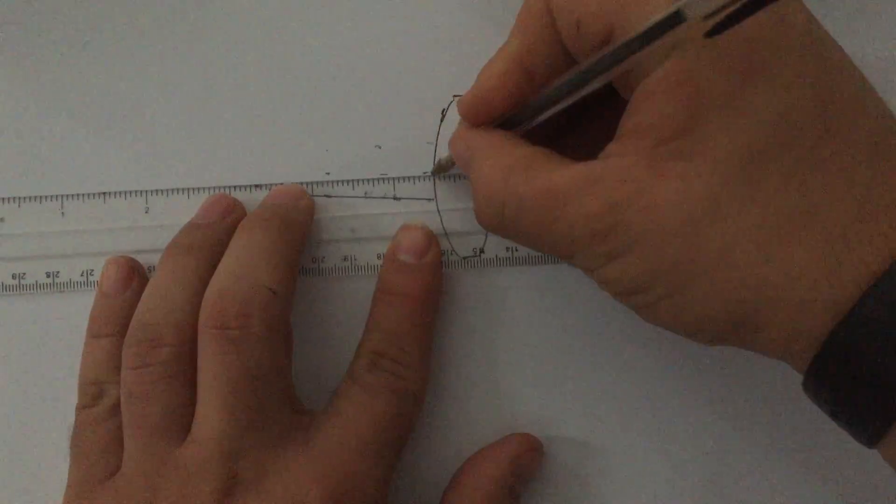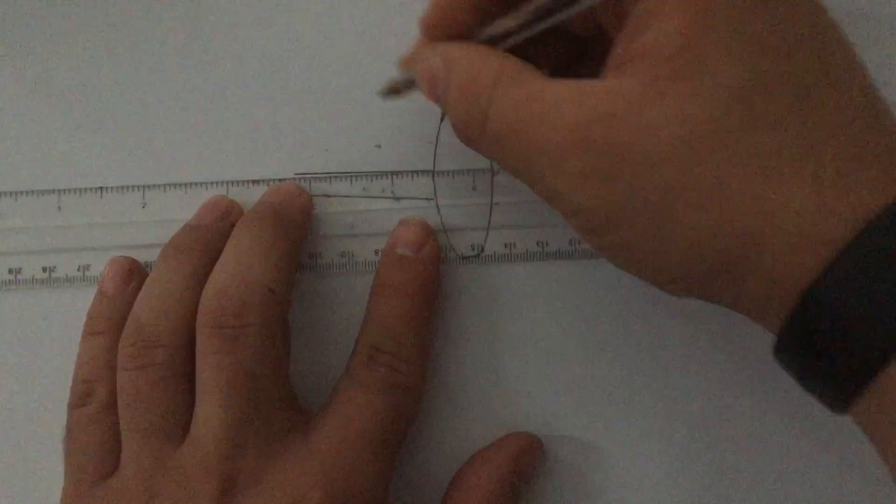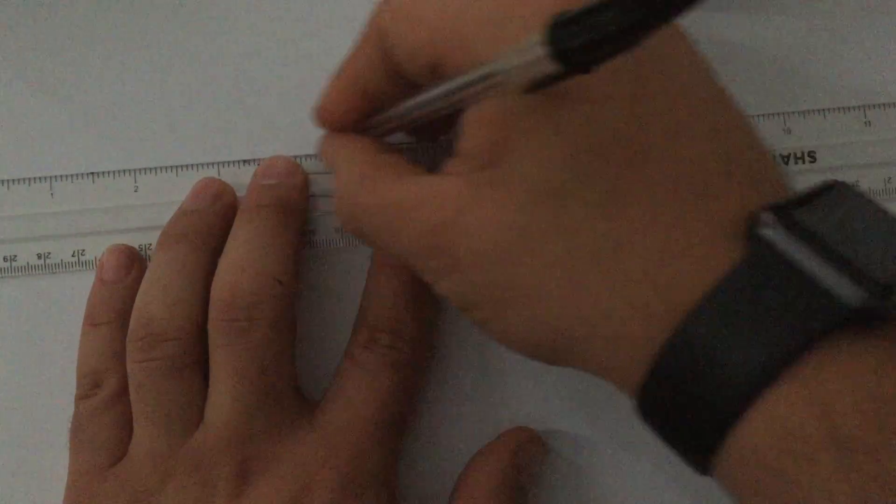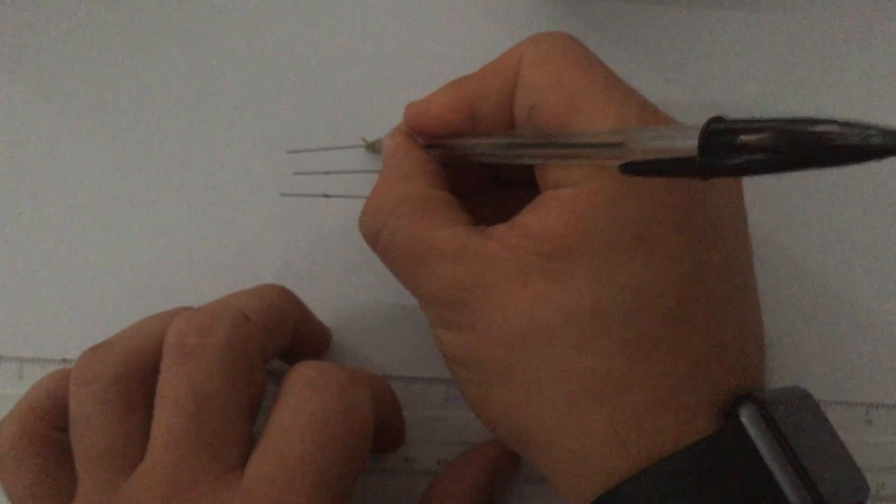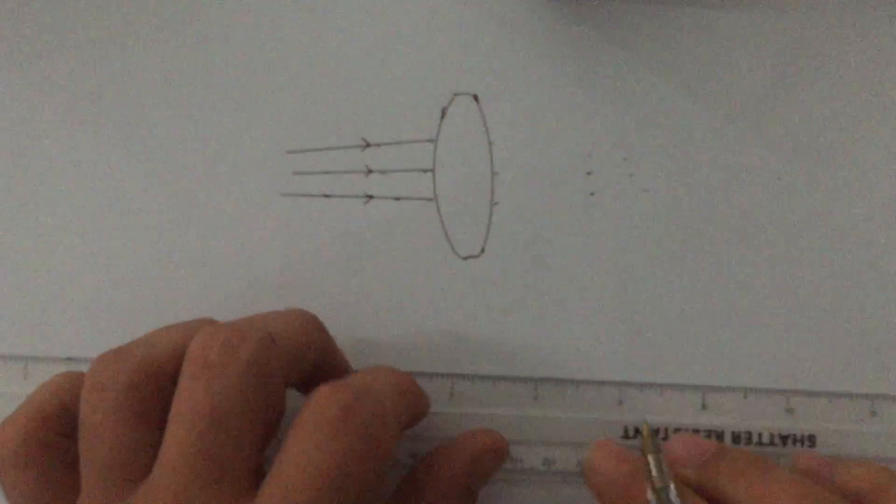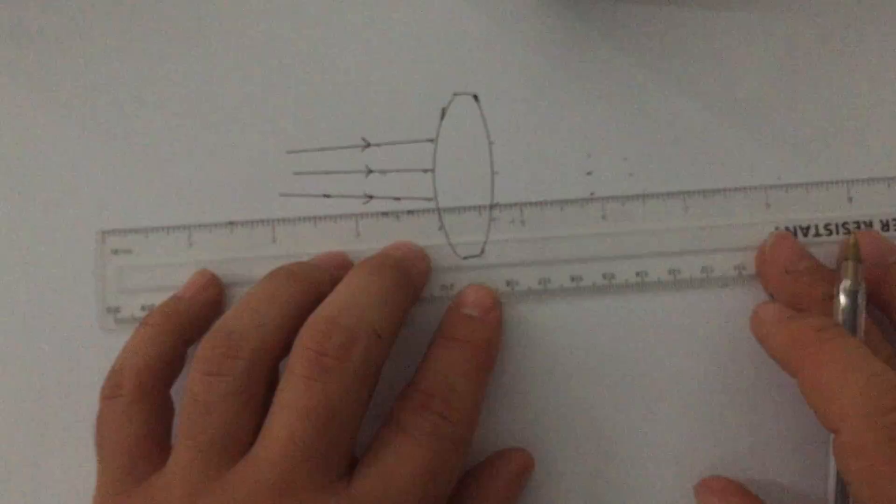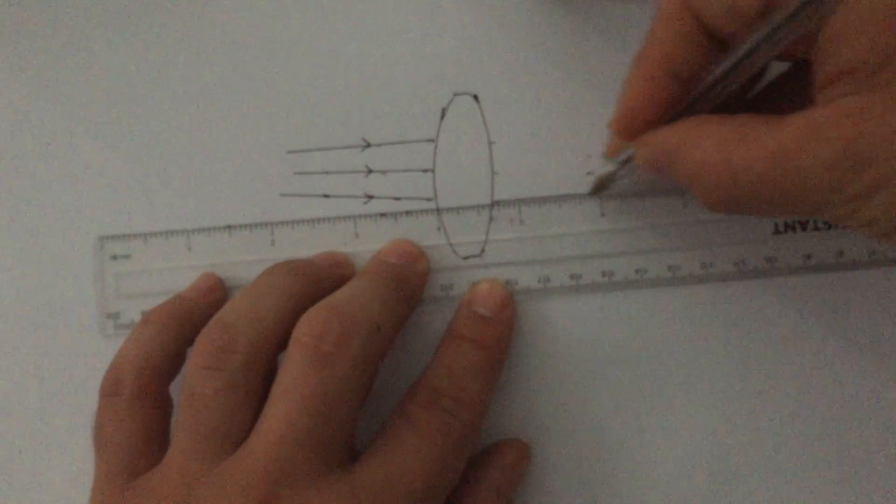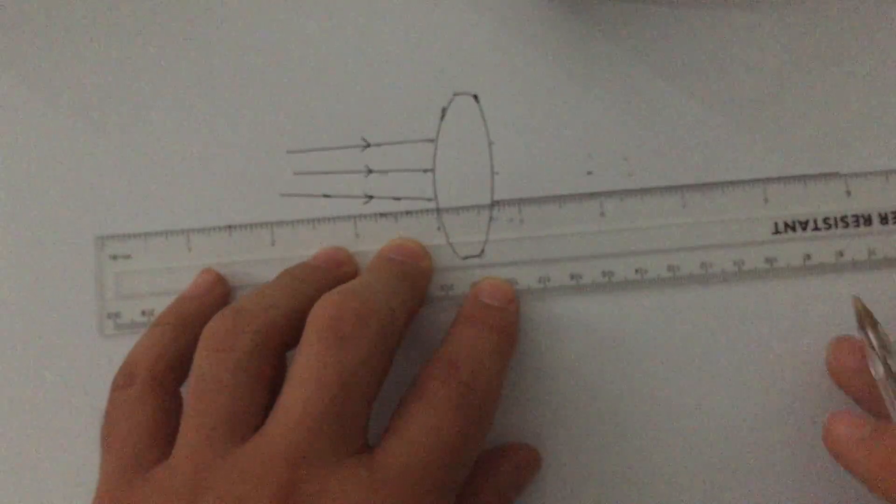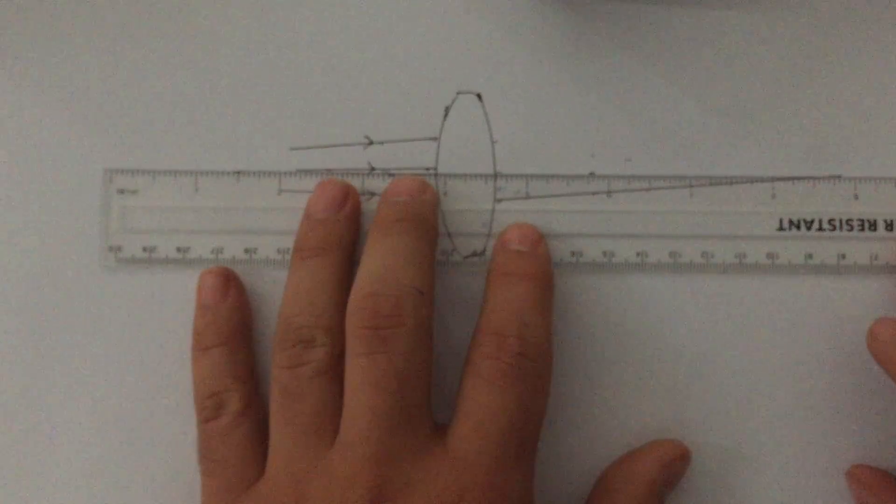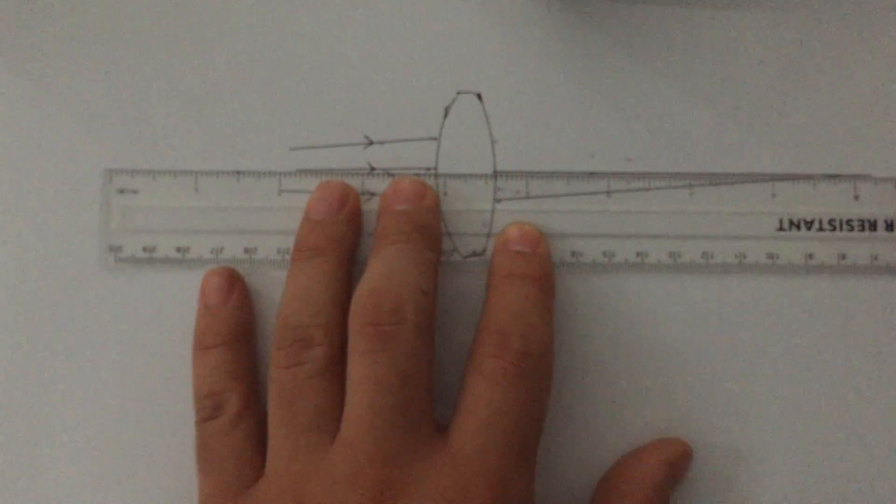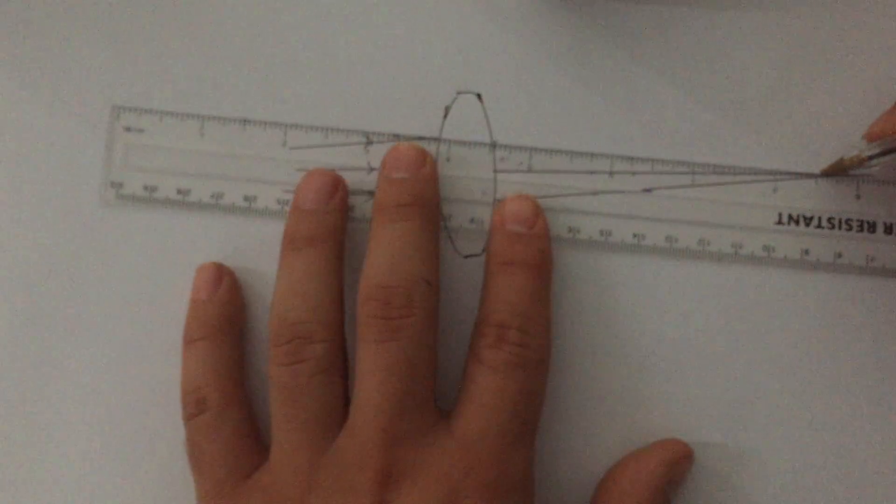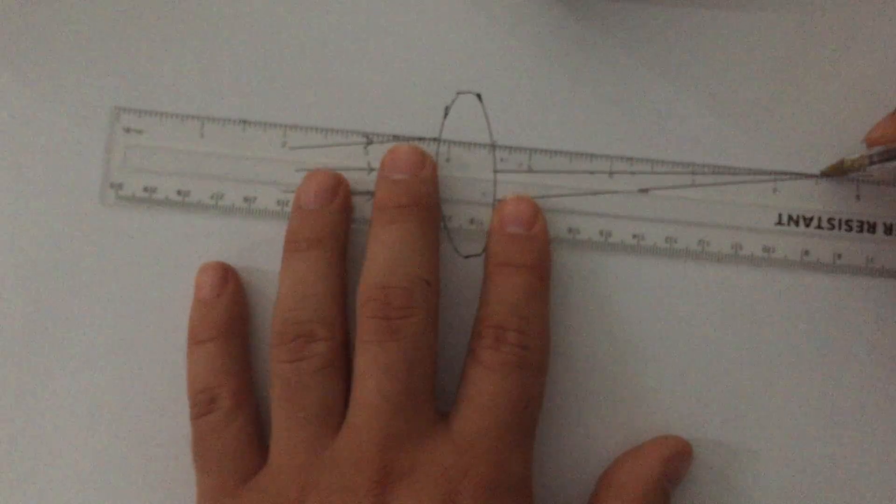So we have one, two, three. We have our three incident rays. And then on the other side, it's going to pass one, two, and three.